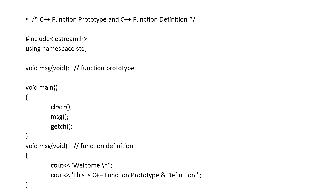Here is an example showing both function prototype and function definition. The prototype is void msg(void) — void is the return type and void means no parameter. You are just printing inside, not returning anything and not taking any arguments, that is why the return type is void. In the main section you call the function. When that statement is reached, control goes to the function section, executes it, comes back, and finishes the program. This is a function prototype.